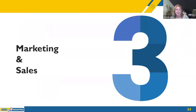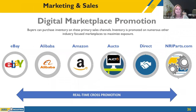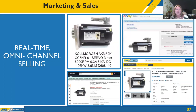Step three: marketing and sales channels. NRI has sold millions of items to hundreds of thousands of buyers in over 120 countries, including resellers, end users, OEMs, developing markets, and commodity buyers. NRI's digital market promotion is utilized on platforms such as eBay, Alibaba, Amazon, Octo, direct sales, NRI Parts, and 32-plus other marketing partnership sites. This is our real-time omnichannel cross-marketing — a single listed item is marketed across four major markets along with other partner sites.